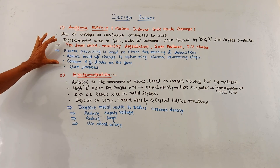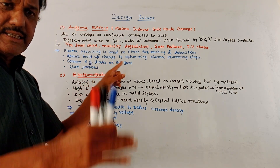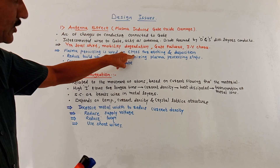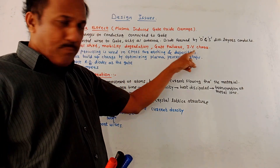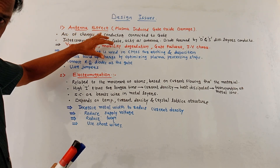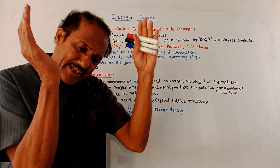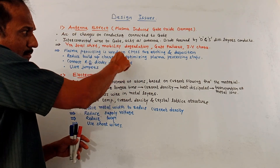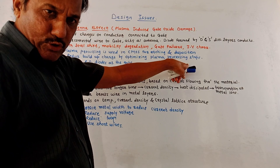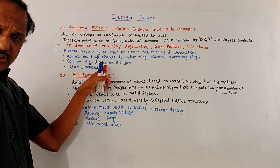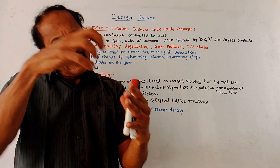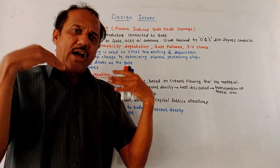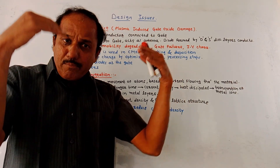To reduce down this antenna effect, certain steps are required. The plasma processing is used in CMOS especially for etching and deposition processes. To reduce the built-up charges — because charges are getting built up in the conductor used as interconnection to the gate terminal — optimize or manage the plasma processing steps. Additionally, connect a reverse biased diode at the gate terminal so that accumulated charges will pass through it. This reverse biased diode will not affect the normal performance of the device.